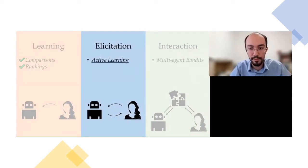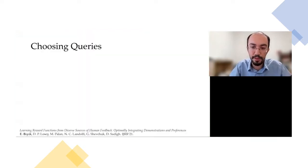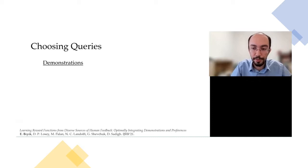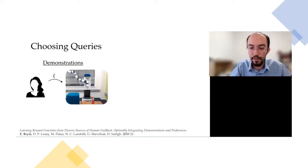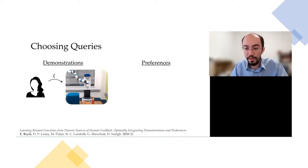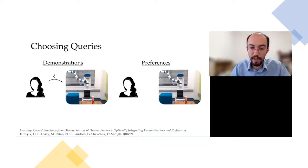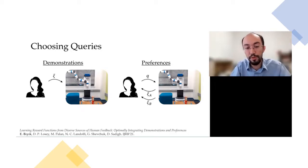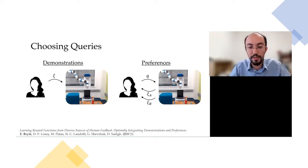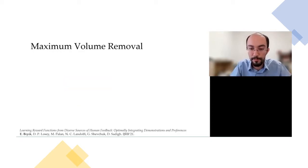One important thing to note about our setup: in demonstrations, the user decides the entire trajectory and we have control over nothing. In preferences, however, the robot first shows some trajectories to the user and the user responds. We have no control over the user's response, but we do have control over which trajectories to show. So we can find a smart way of choosing those trajectories to accelerate the learning of the objective. One such method is the maximum volume removal approach.